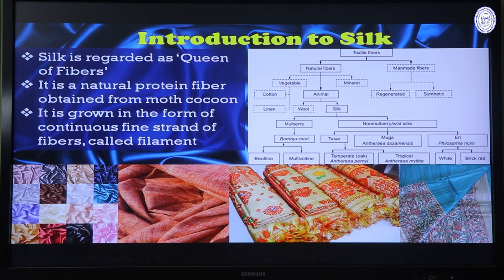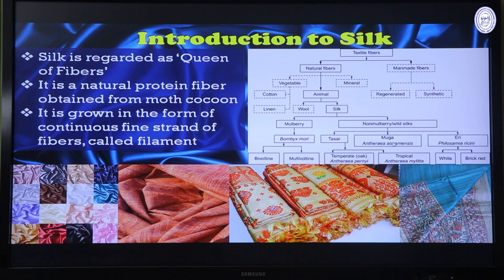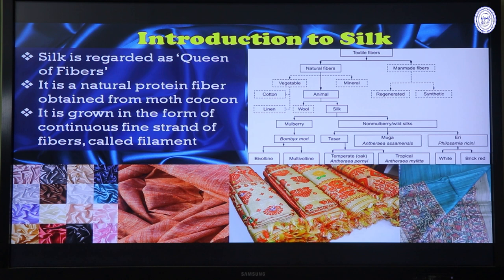Silk can be of two types: mulberry type and non-mulberry type, which can also be considered as wild silk. Mulberry silk is obtained from Bombyx mori species, and its quality can vary based on the life cycle pattern — bivoltine or multivoltine — with bivoltine being much superior. Non-mulberry species include Tassar silk, Muga silk, and Eri silk. The four silks produced chiefly in India are mulberry, muga, eri, and Tassar silk.